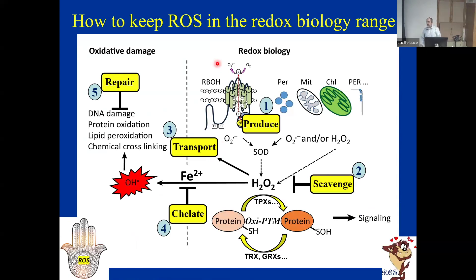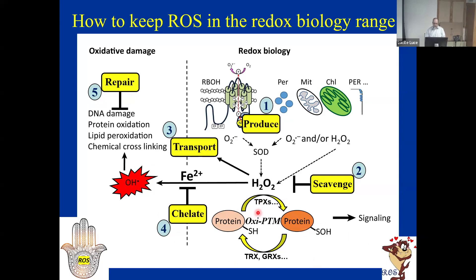So how do you keep ROS in the redox biology range? These are Hamza's five principles: you control the rate of production, you control the rate of scavenging, but you can also control the rate of transport—because you can transport hydrogen peroxide out of different organelles or even outside the cell. You have to chelate free metals, and you have to constantly repair damage. If you do all these five processes all the time, ROS really are very important signal transduction molecules in the cell.